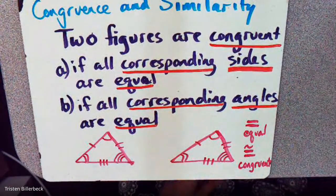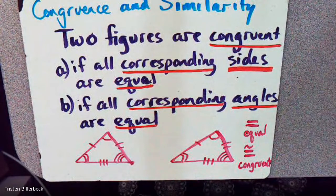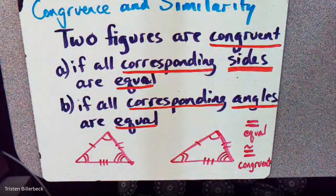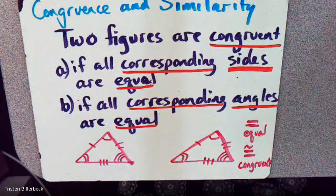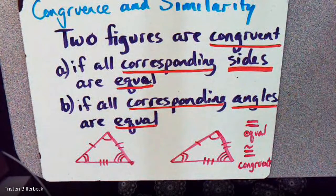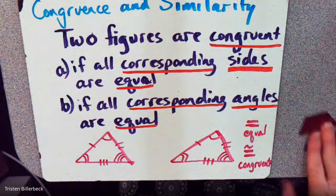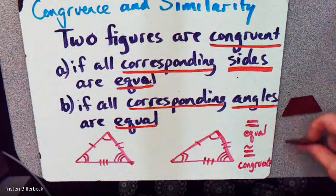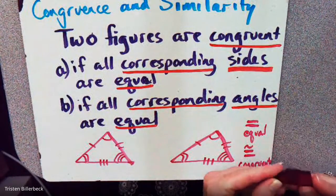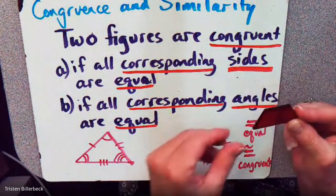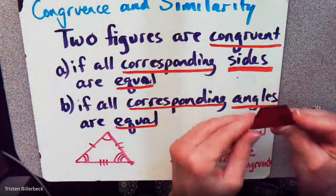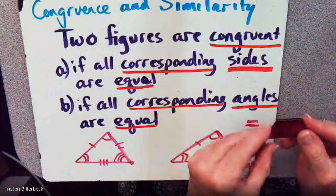Think of identical twins to cement a picture of it. Identical twins are congruent — one twin is congruent to the other twin. Their measures of height might both be five foot six, so those measures are equal. But the objects themselves are congruent. They can lie on top of each other with matching angles and sides, where all the angles are congruent and all the sides are congruent.